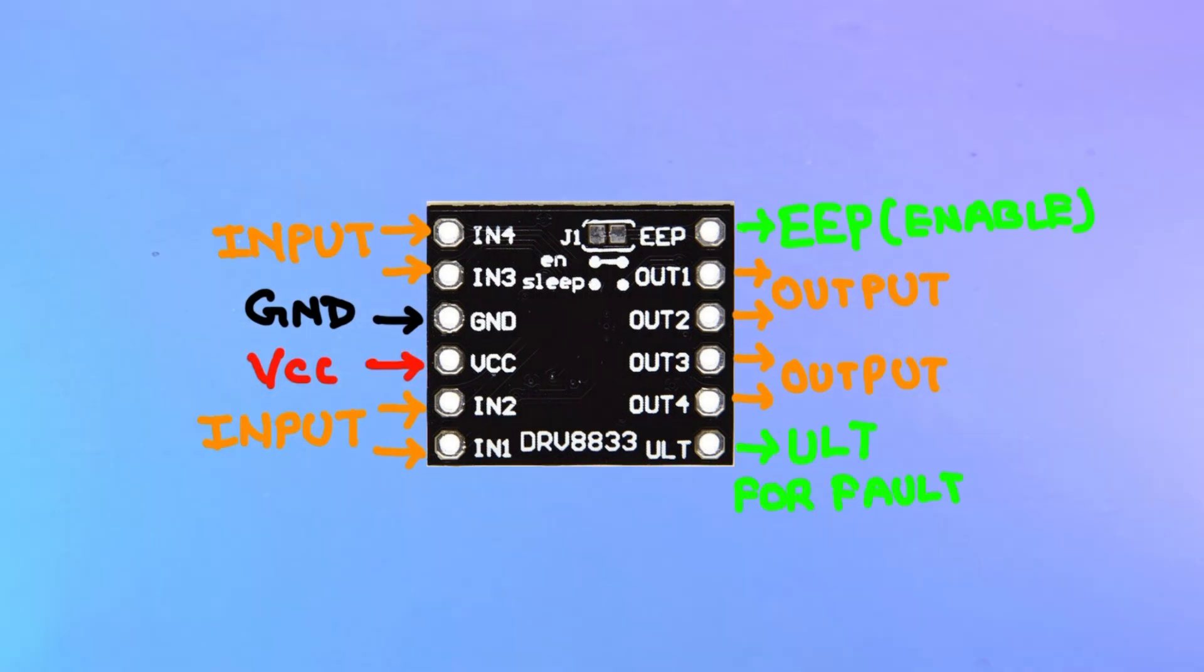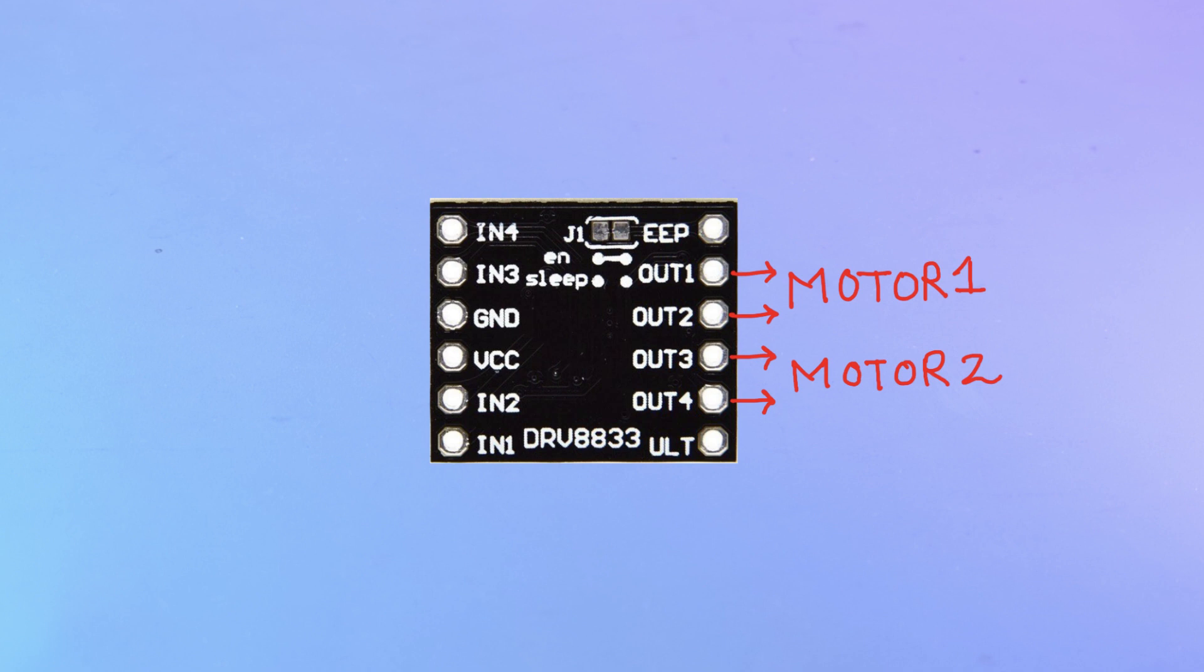Now we got our basics cleared. Let me set it up on the breadboard to test it. So I will be connecting both motors on output 1, 2, 3 and 4. And IN1 and IN2 will be going to pin 5 and pin 6 on Arduino. And IN3 and IN4 will be going to pin 9 and pin 10 on Arduino. And VCC and ground pins will be connected to VCC and ground pins on Arduino.